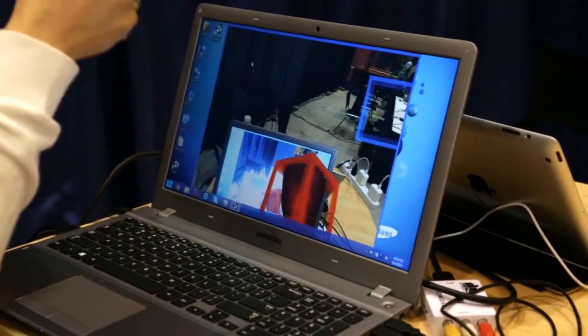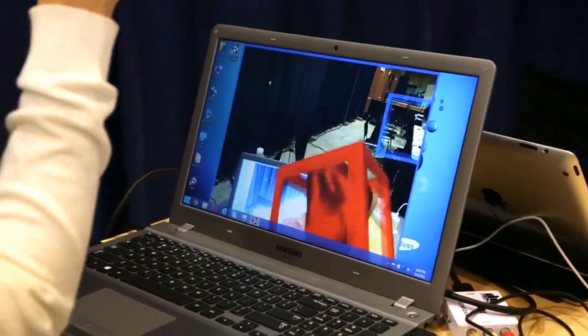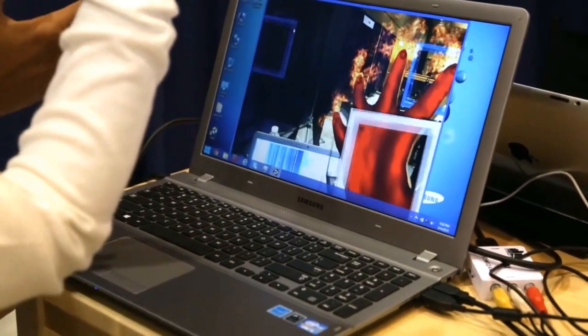So every object in the world has three coordinates instead of two. It's fully 3D. And if you open your hand up, like your palm, you will end up releasing the cube and it becomes white.